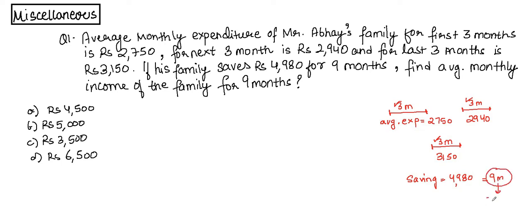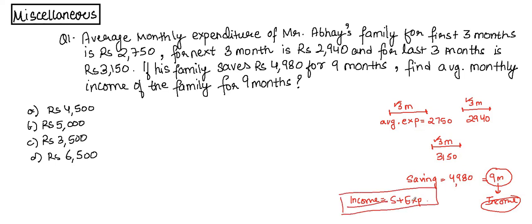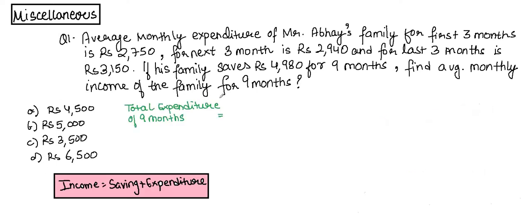To calculate income, there is a basic formula: Income equals Savings plus Expenditure. Total income is your savings and your expenditure combined. Now we need to calculate the average monthly income — not total — and these are the options given. First, let us calculate the total expenditure for nine months, because only then can we find the income.